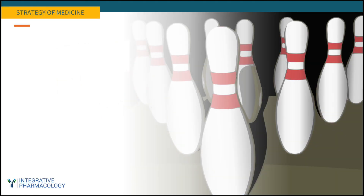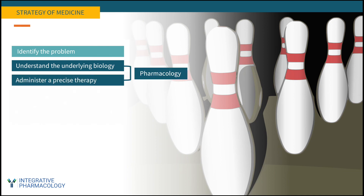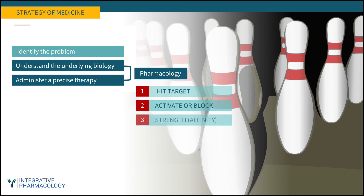Going back to the strategy of medicine to summarize: identifying the problem is the realm of diagnosis; understanding the underlying biology and matching it with a precise therapy is the realm of pharmacology. There are two branches — pharmacodynamics, which we've summarized in this first part, and pharmacokinetics, which we'll get to in part two. Pharmacology involves hitting a target, activating or blocking it with strength and with precision.